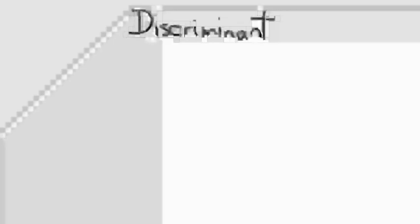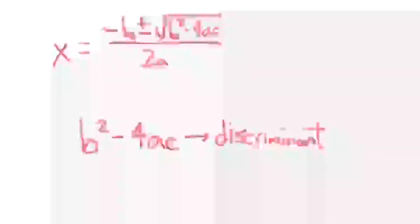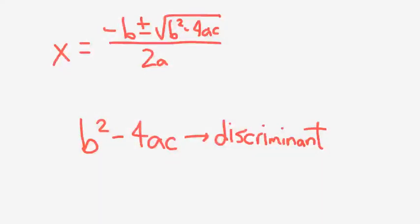In this video we're going to look at the discriminant of the quadratic formula. Inside the quadratic formula, the part underneath the square root is known as the discriminant. In other words, b squared minus 4ac.